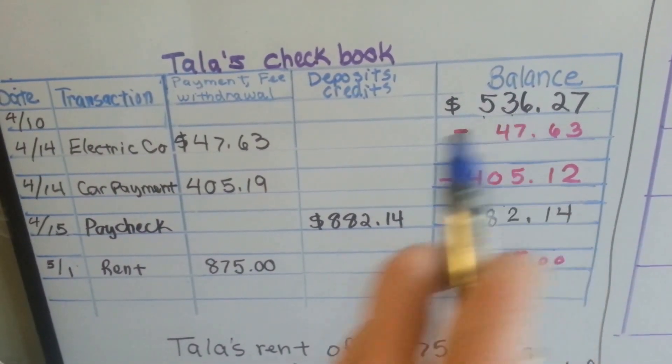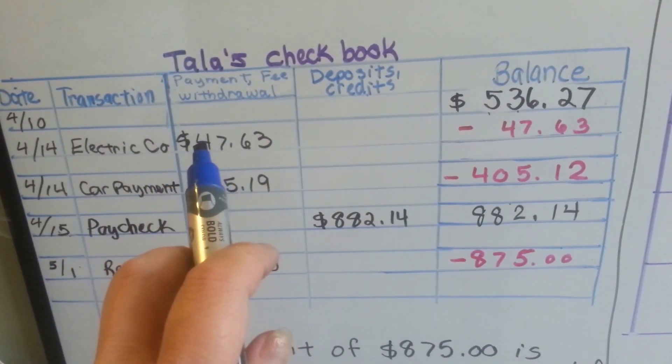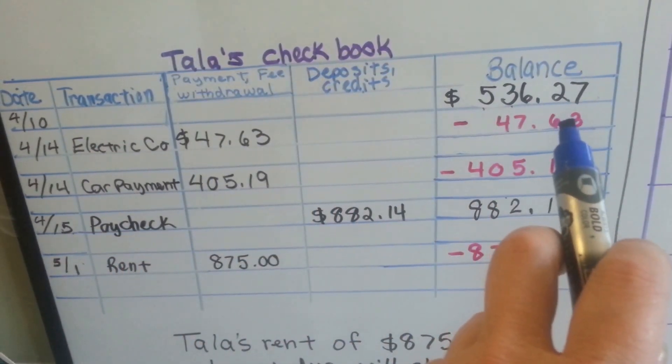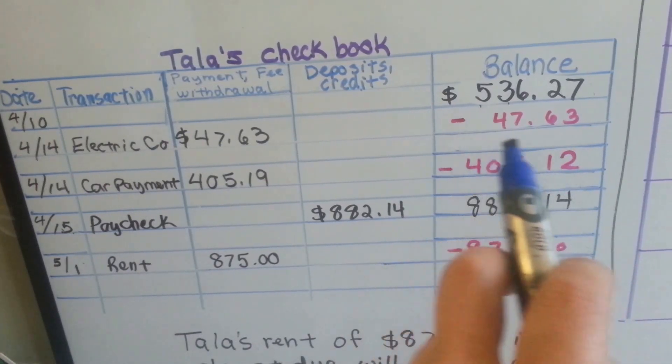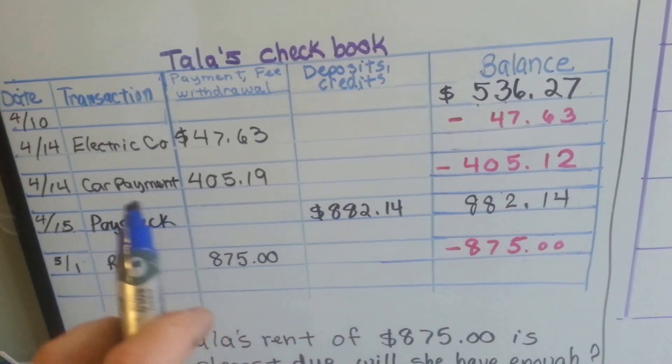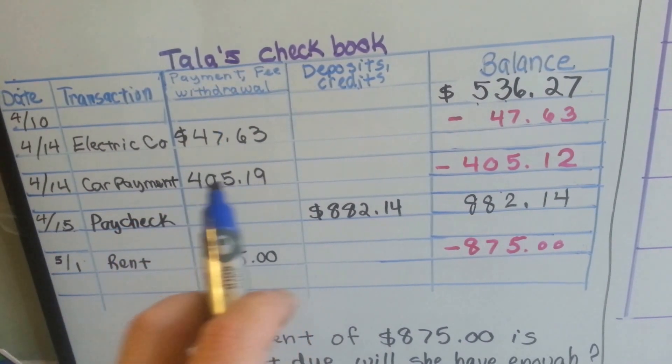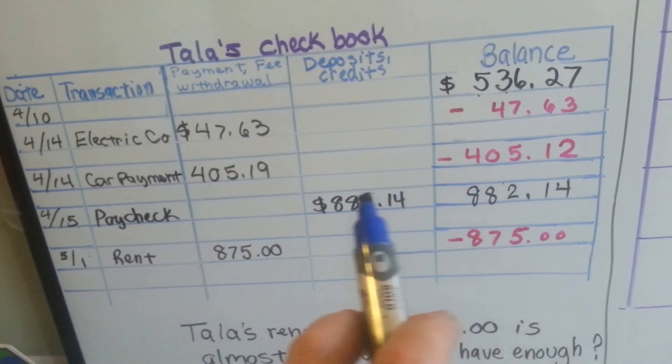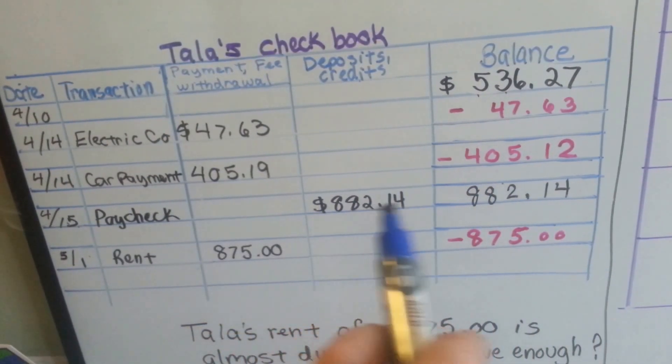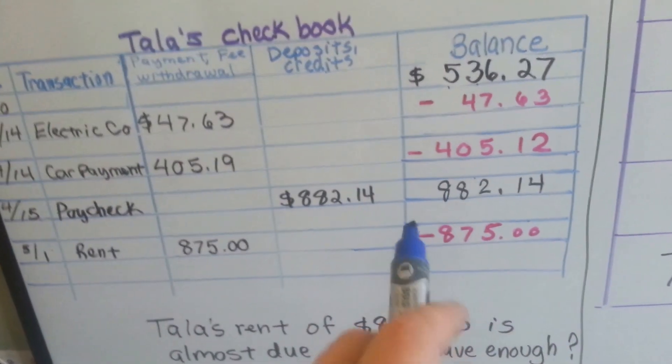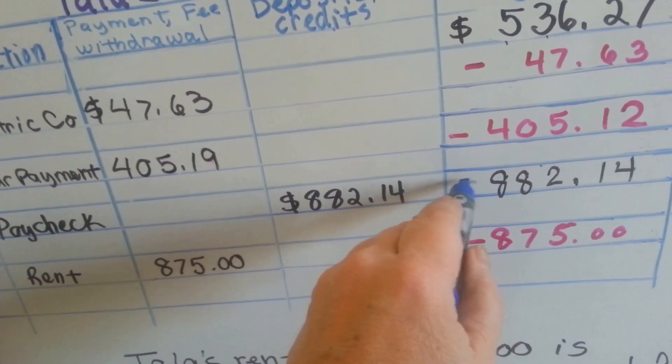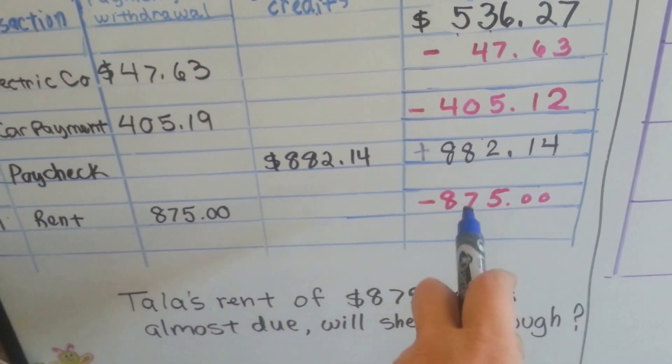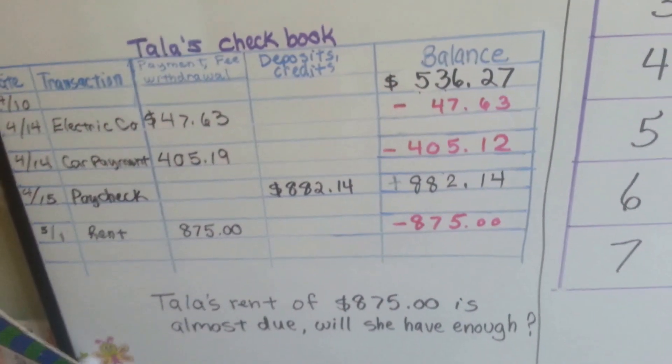Here's the balance that she started with. Here's her electric bill in the payment and fee withdrawal section. If we subtract this, then we'll get a new balance right here. Here's her car payment in the payment and fee withdrawal section. We could subtract that from the new balance and get another new balance. Here's her paycheck. We add this to the other balance and we'll get a balance for right here. Let's try it.